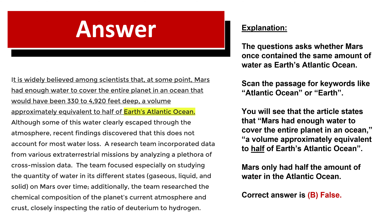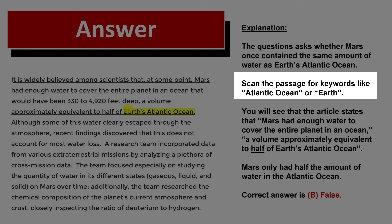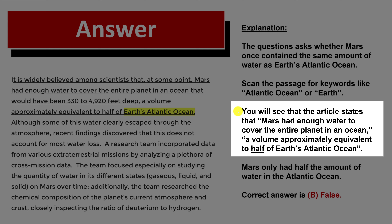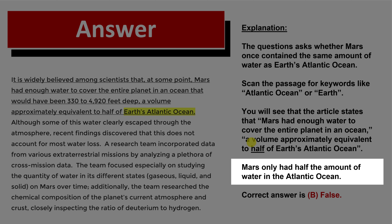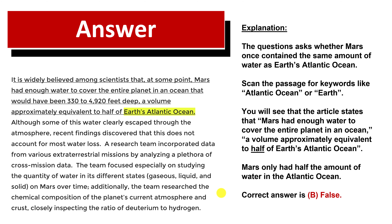With these types of questions, you're presented with a passage full of professional words and long sentences that are hard to understand. Your goal is to scan the passage quickly to find key words. The passage states Mars had water equivalent to half of Earth's Atlantic Ocean — not the same amount. So the correct answer is choice b: false.